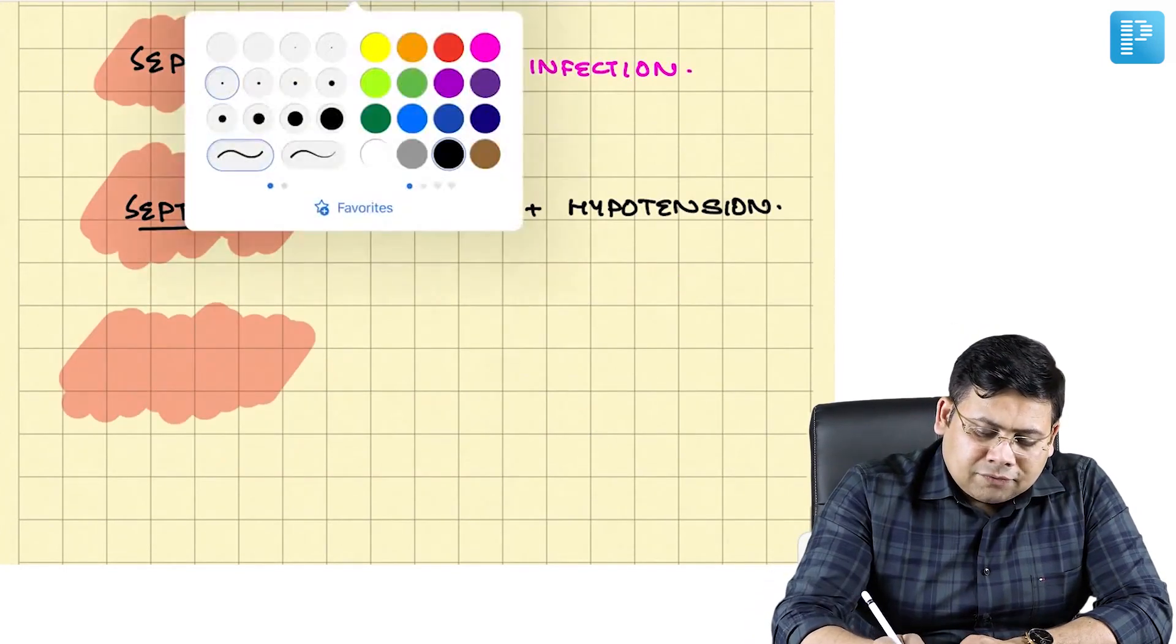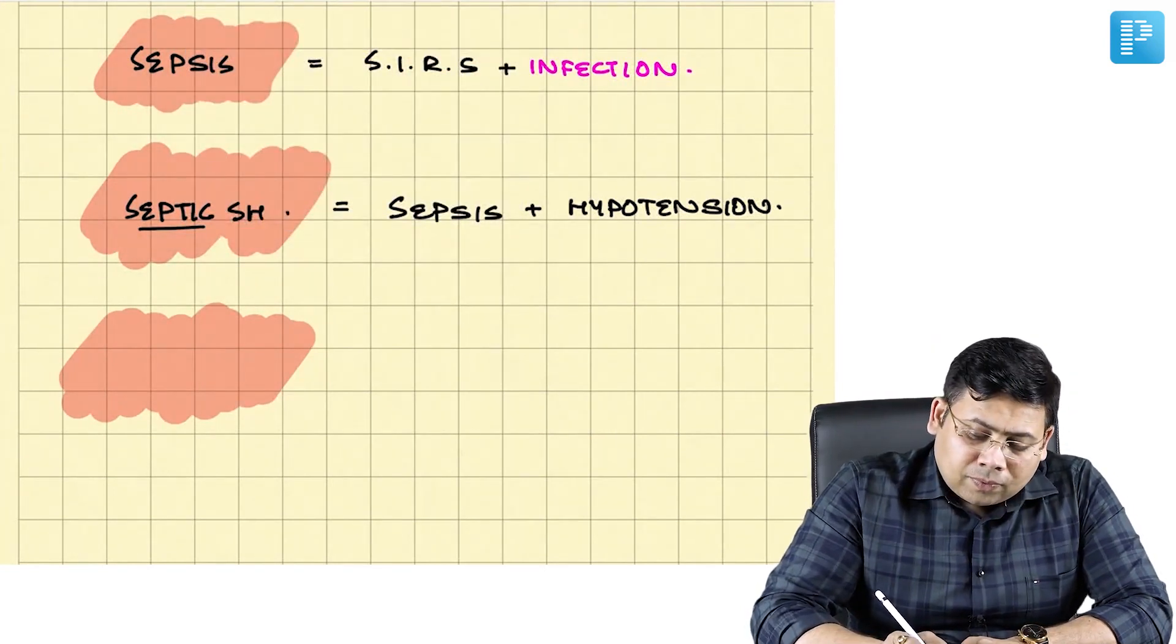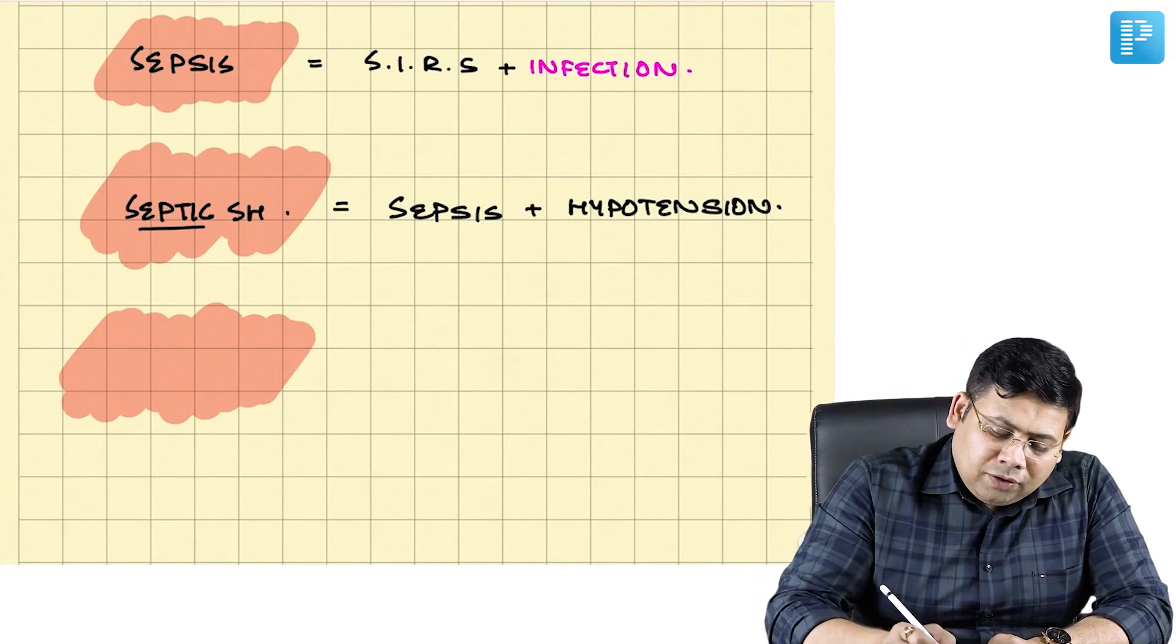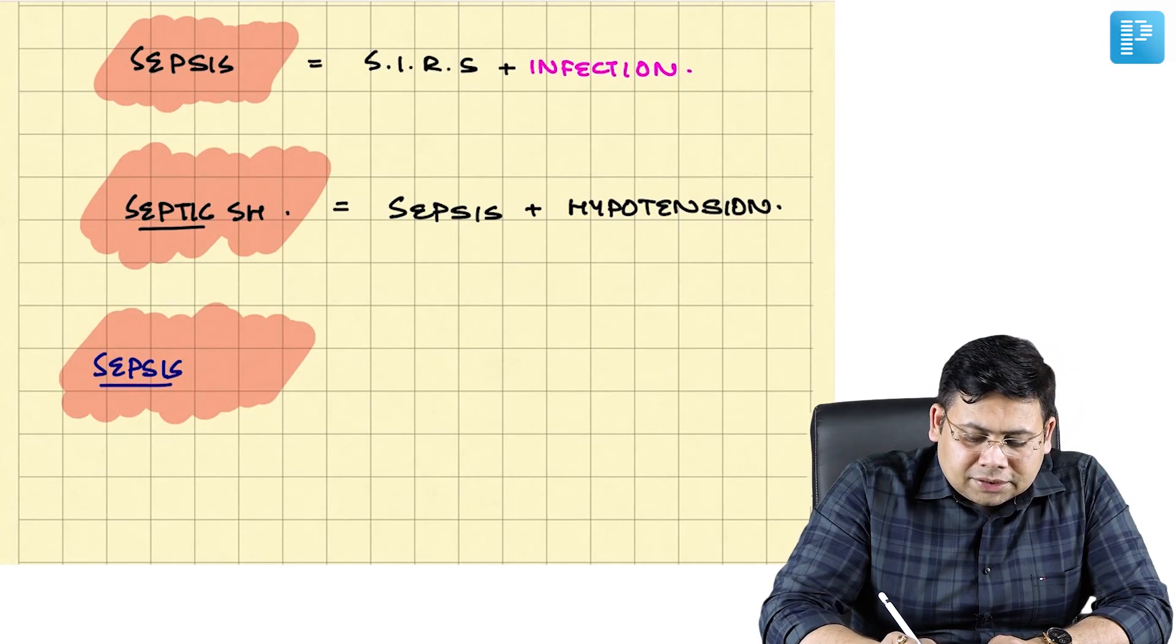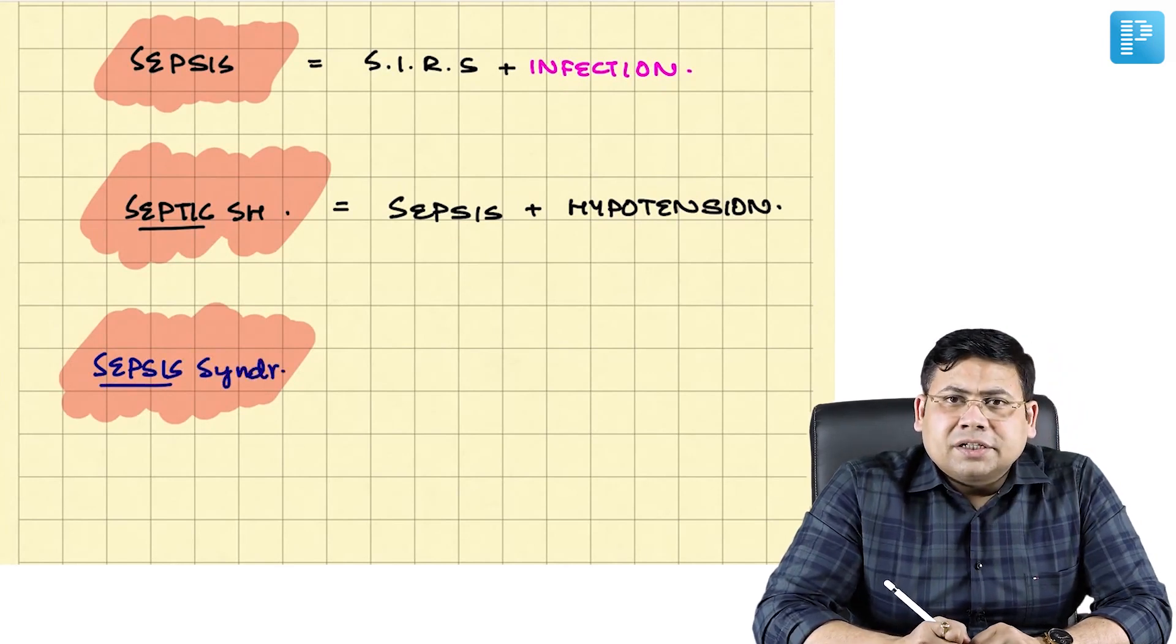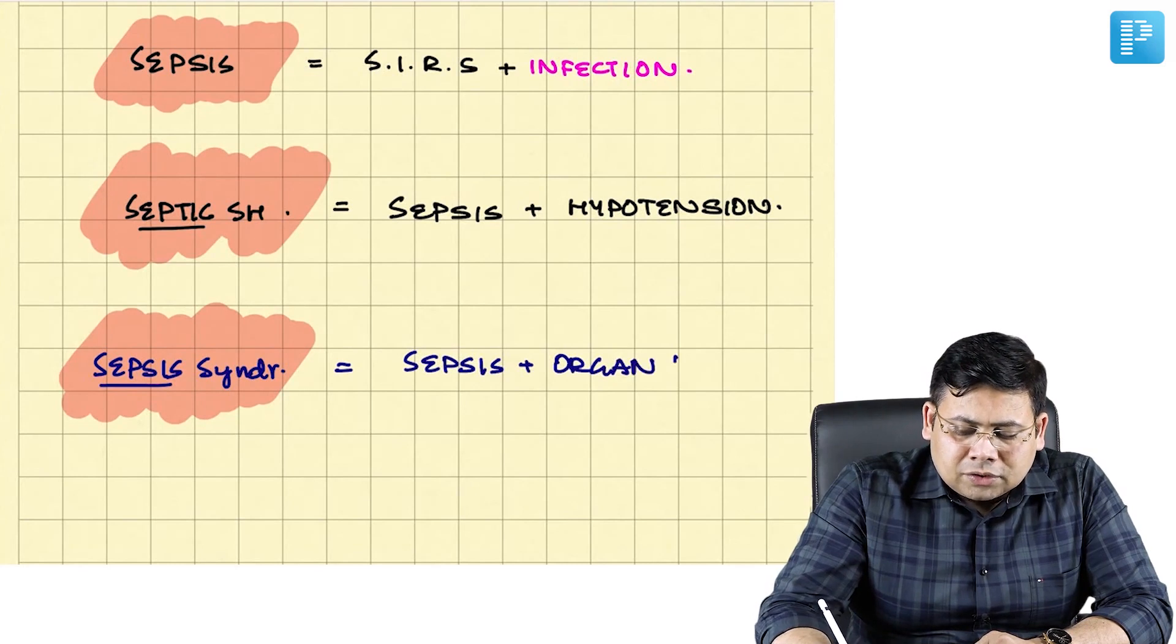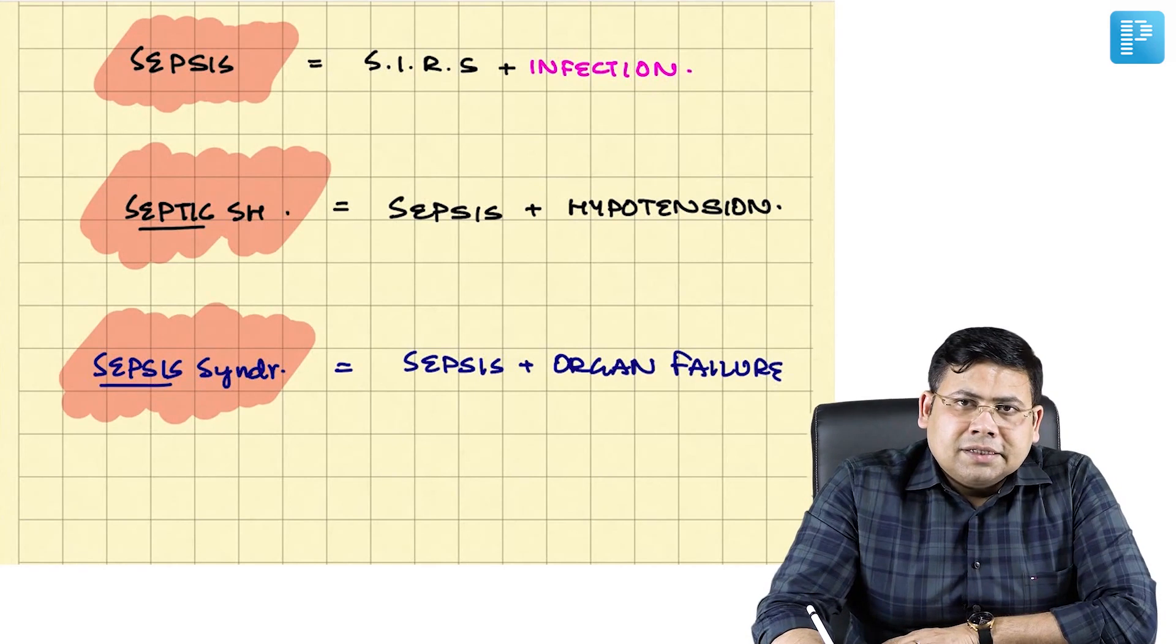We have seen sepsis, we have seen septic shock. Now let us understand the concept of sepsis syndrome also. What is sepsis syndrome? This is defined as sepsis plus organ failure. Sepsis plus organ failure is defined as sepsis syndrome.